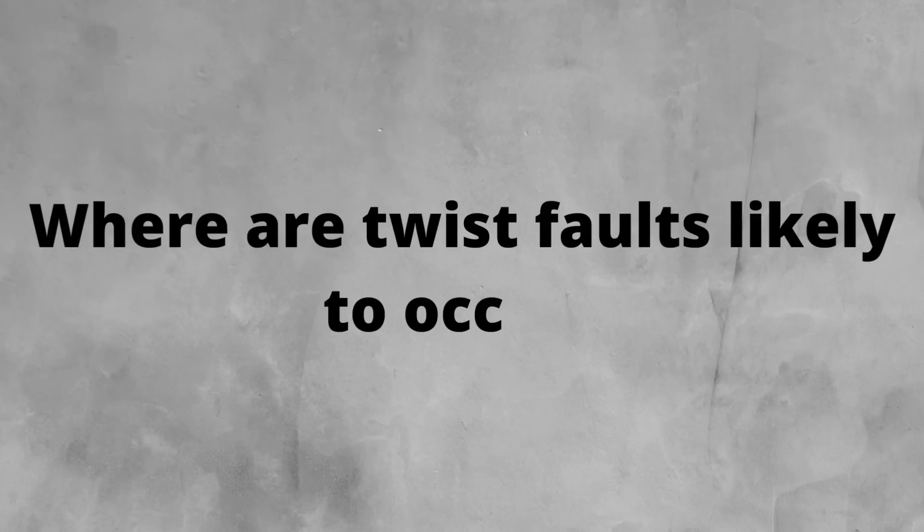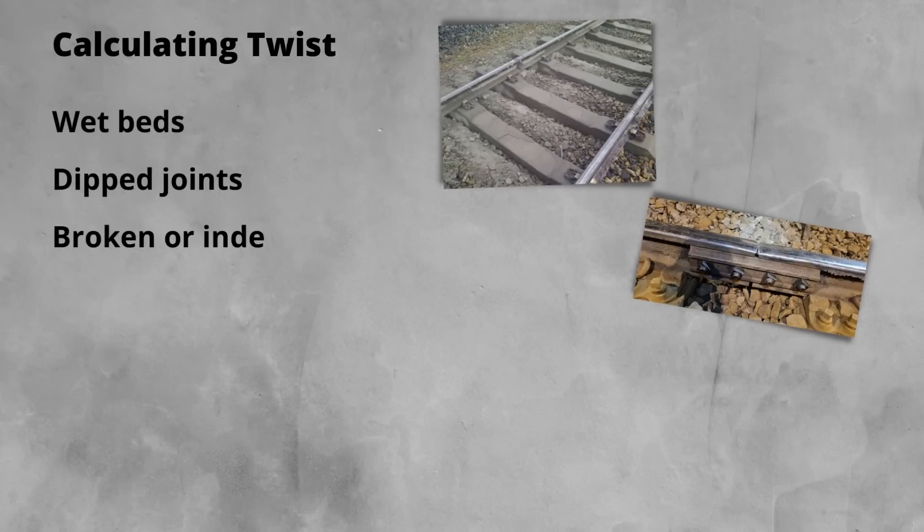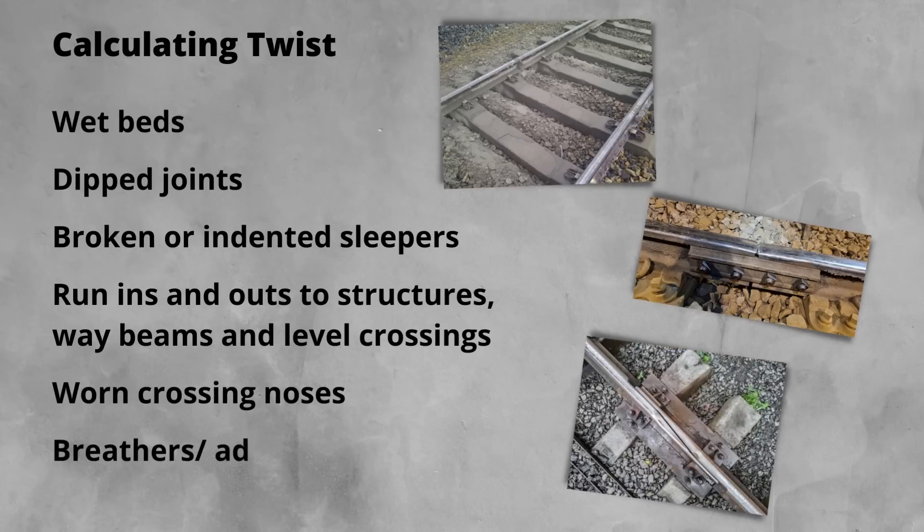It's common to find twist faults in the same kind of areas or with the same underlying causes. A few of these areas that you're more likely to get them are wear beds, dipped joints, broken or indented sleepers, the run-ins and run-outs of structures, way beams and level crossings, caused by the wear at crossing noses,